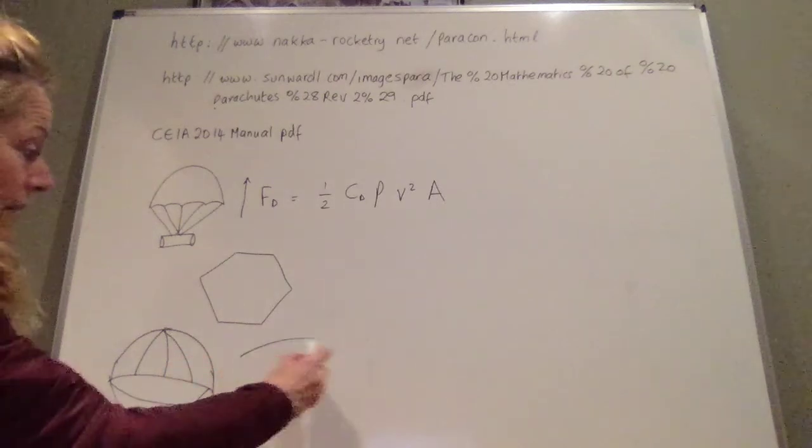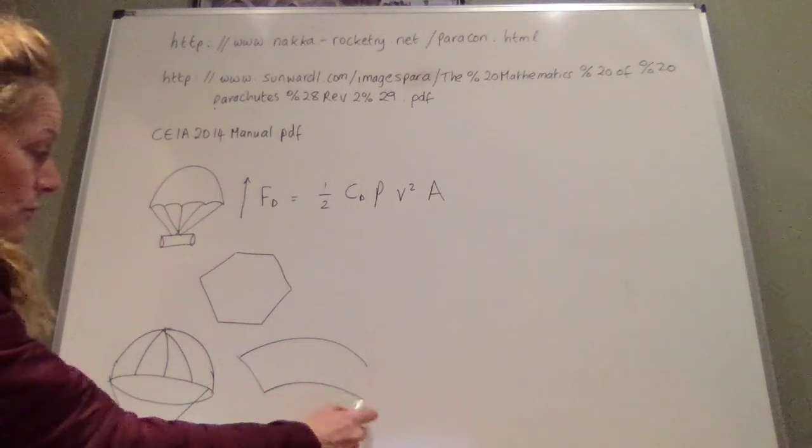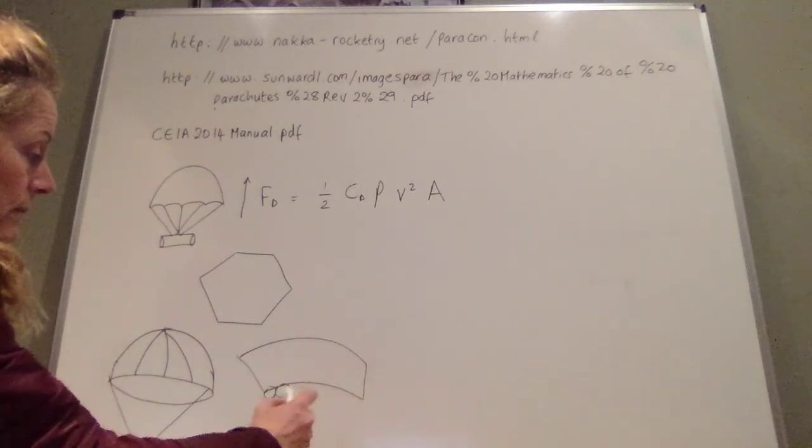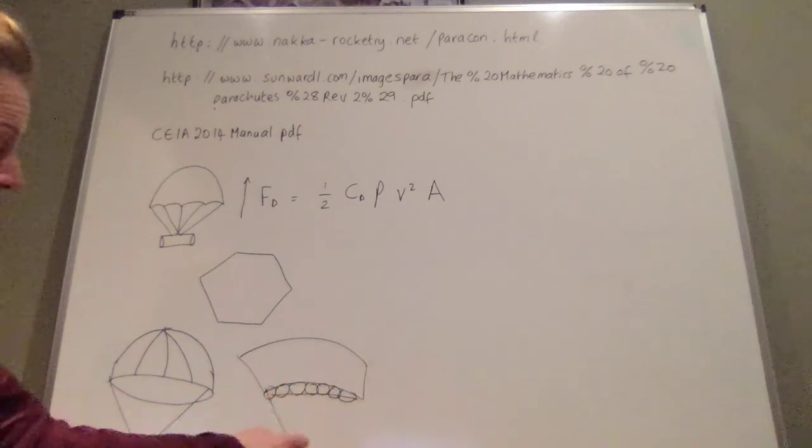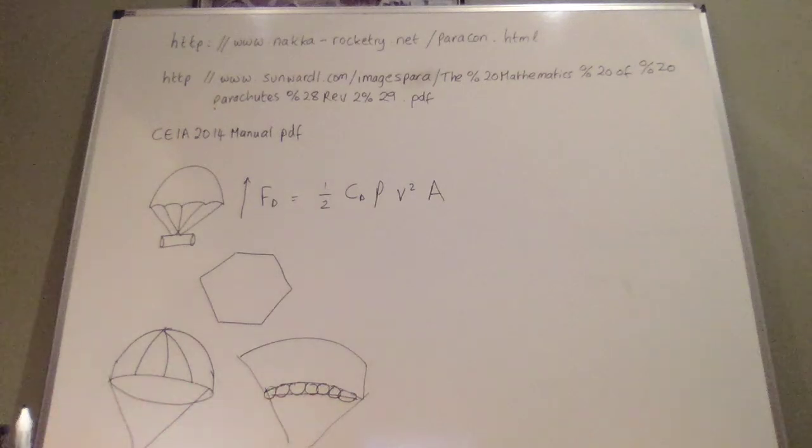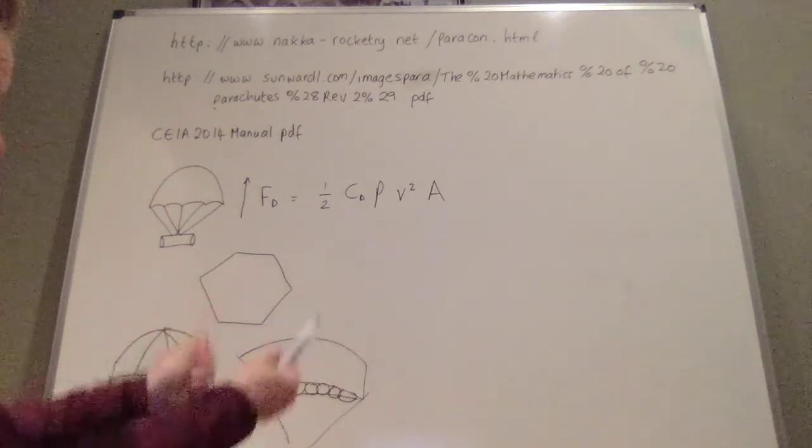And on top of that, you can have a parafoil, which is quite a complicated one. That looks something, this is a really rough drawing, but it's the one that they would use paragliding. And this will be one you're using if you want to control where you're going.